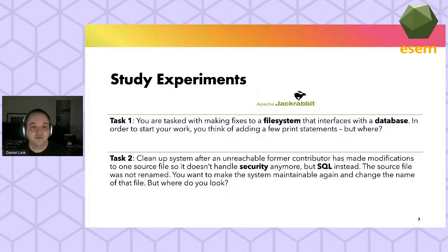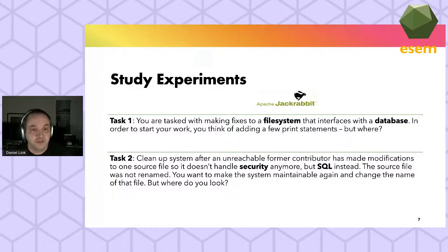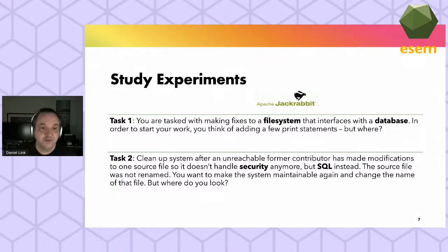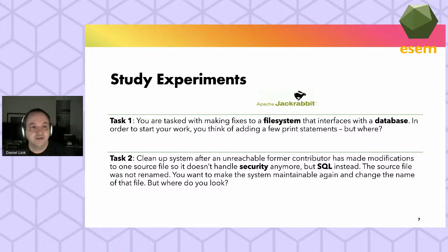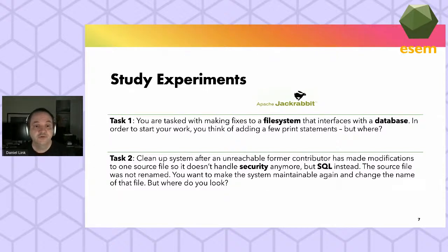Our experiments used the then-current version of Apache Jackrabbit, version 2.20. Participants got two tasks. Task one: you are tasked with making fixes to a file system that interfaces with a database; to start your work you think of adding a few print statements — but where? Task two: clean up the system after an unreachable former contributor modified one source file so it no longer handles security but SQL instead — the source file was not renamed — you want to make the system maintainable again by changing the file's name, but where do you look?